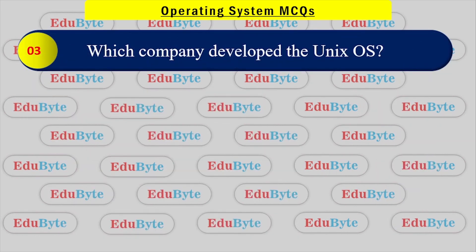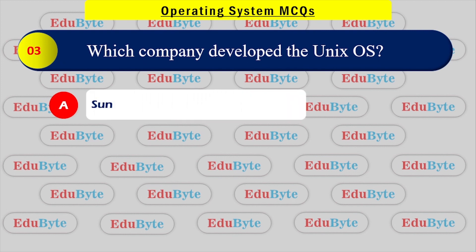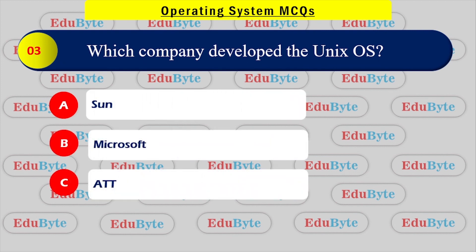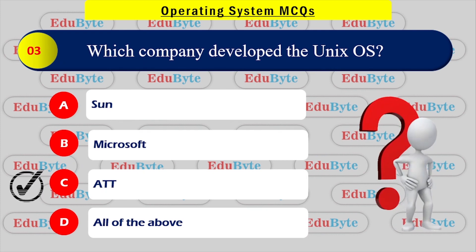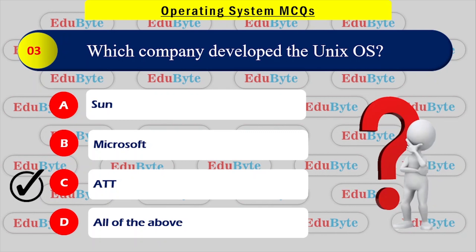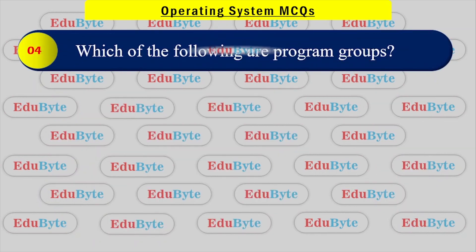Which company developed Unix OS? The options are: Option A - Sun, Option B - Microsoft, Option C - AT&T, Option D - All of the above. The correct answer is AT&T. AT&T developed the Unix operating system.